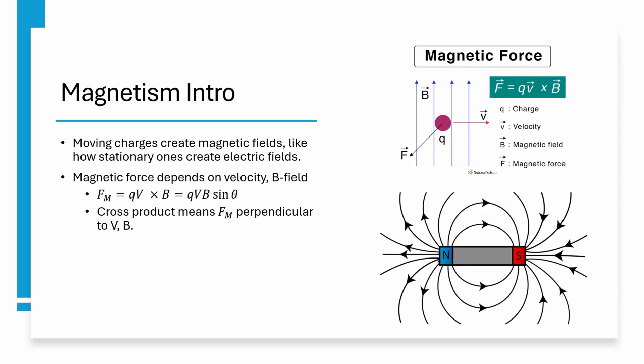Because of how a cross product is defined, magnetic force is always perpendicular to both velocity and B-field as we can see in our top picture.